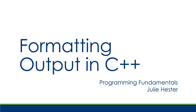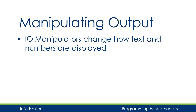Hi, this is Julie Hester. In the last video we started working with floating point numbers. Now I want to show you how you can format output of floating point numbers and text in C++. C++ has several ways that you can manipulate the way your output is displayed, and these are called IO manipulators or input-output manipulators. They're going to change how the text and numbers are displayed on the console window.